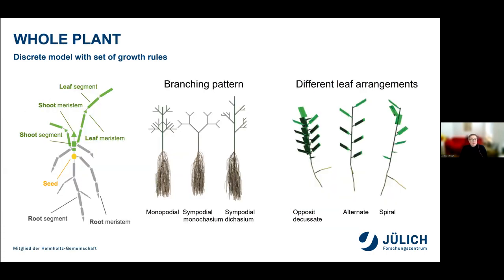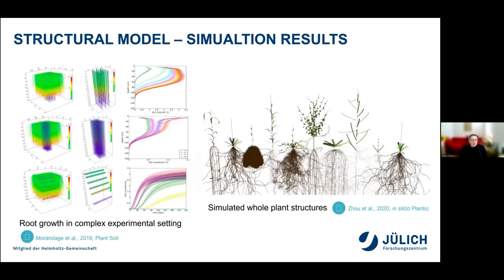For the whole plant model, we have to consider different kinds of organs, which have different branching patterns and arrangements, for example, different leaf arrangements. This way of representing a 3D plant architecture can be viewed as a skeleton of a 3D plant represented by a tree graph, where each edge has additional information such as the diameter, color, and other properties. On the right-hand side, you can see some simulated whole plant structures, and on the left, root growth in more complex environmental settings — representing a field of maize roots — with different sampling methods like soil coring, trenches, or mini rhizotubes in the field.